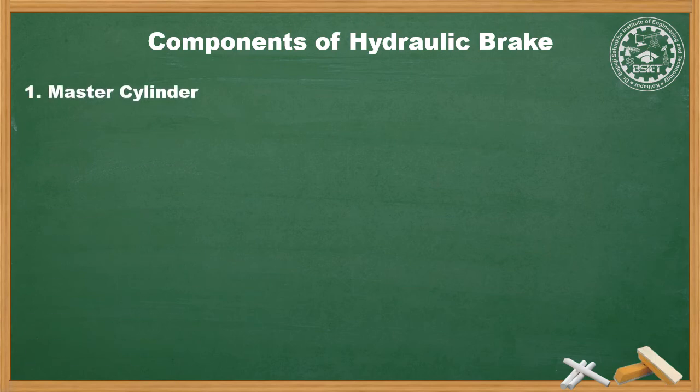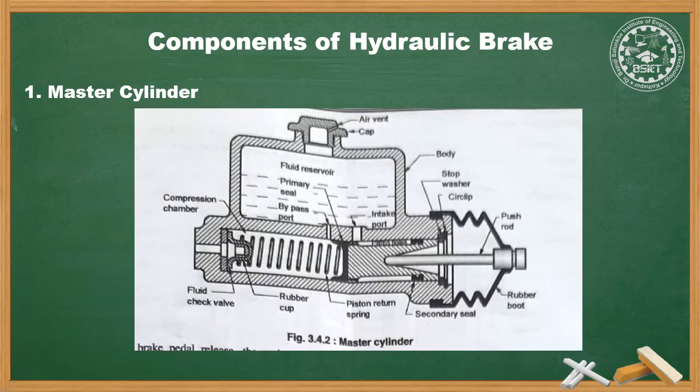The master cylinder consists of two chambers: a fluid reservoir and a compression chamber. The fluid reservoir contains fluid with a filler cap at the top with a small air vent to keep the brake fluid at atmospheric pressure. Both chambers are connected by two inlet ports — the smaller one is called the intake port and the larger one is called the bypass or compensating port. A piston operates inside the compression chamber. There are a number of holes in the piston head on the high-pressure side. The discharge end has a fluid check valve with a rubber cup fitted inside, which retains residual pressure in the brake line when brakes are released.